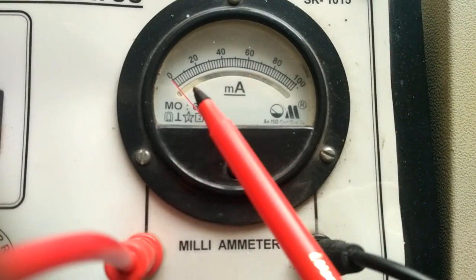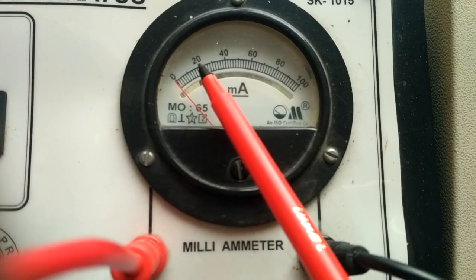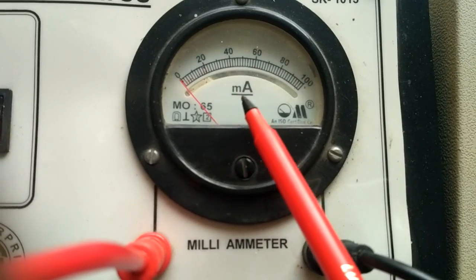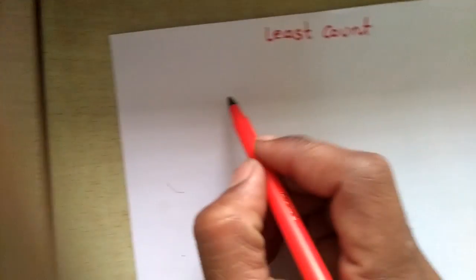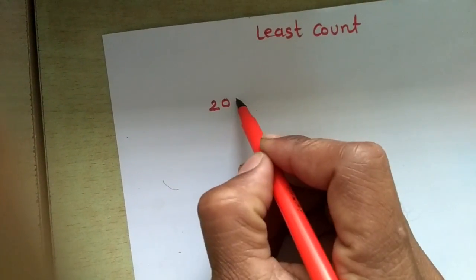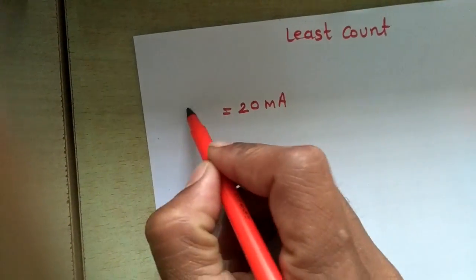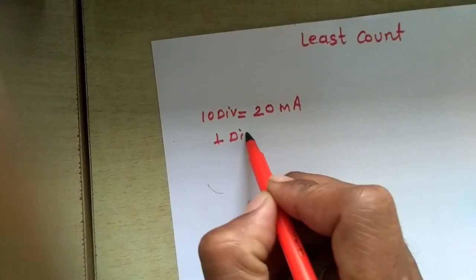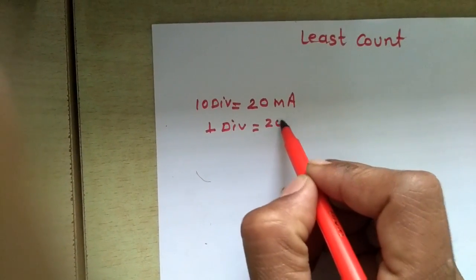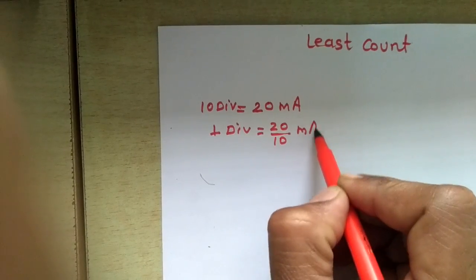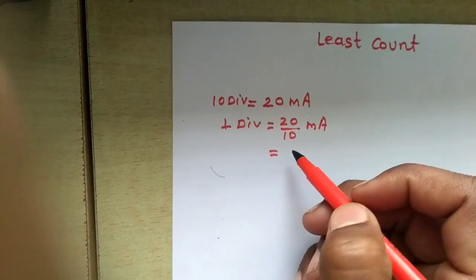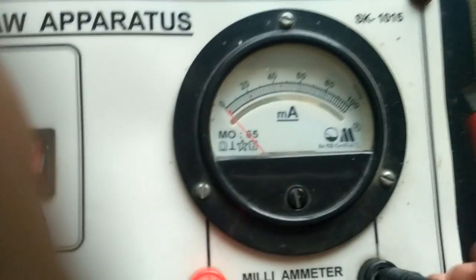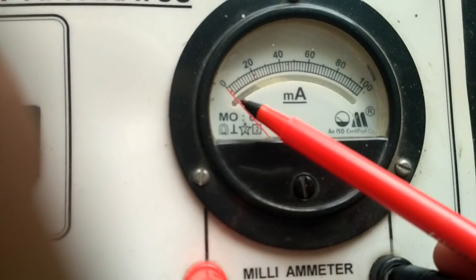I am showing you a meter. You can see that there is zero, and after that 20 and 40, meaning this 10-division range is actually representing 20 mA. So note down this value: 20 mA means 10 divisions. To find the least count, find the value of one division: 20 divided by 10 equals 2 mA. So the least count of this ammeter is 2 mA — it means this instrument can read 2 mA.